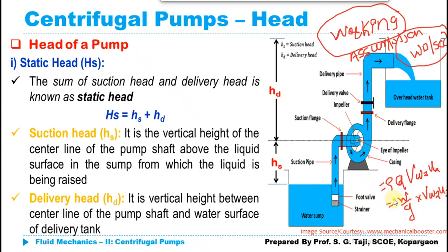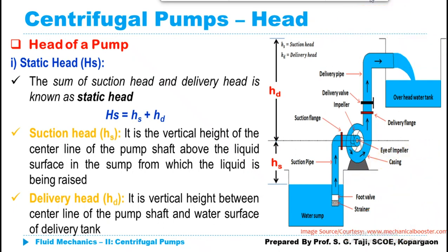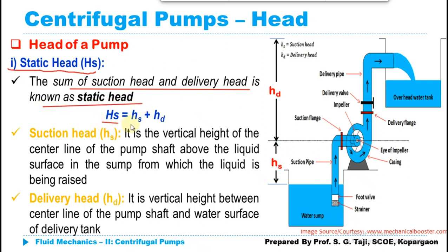Where W is given by the equation Rho QG. So that is what we discussed in the last lecture. In this lecture we will be discussing different heads generally considered in the centrifugal pump. The first one is the static head, which is the sum of the suction head and delivery head, given by HS equals small hs plus small hD.